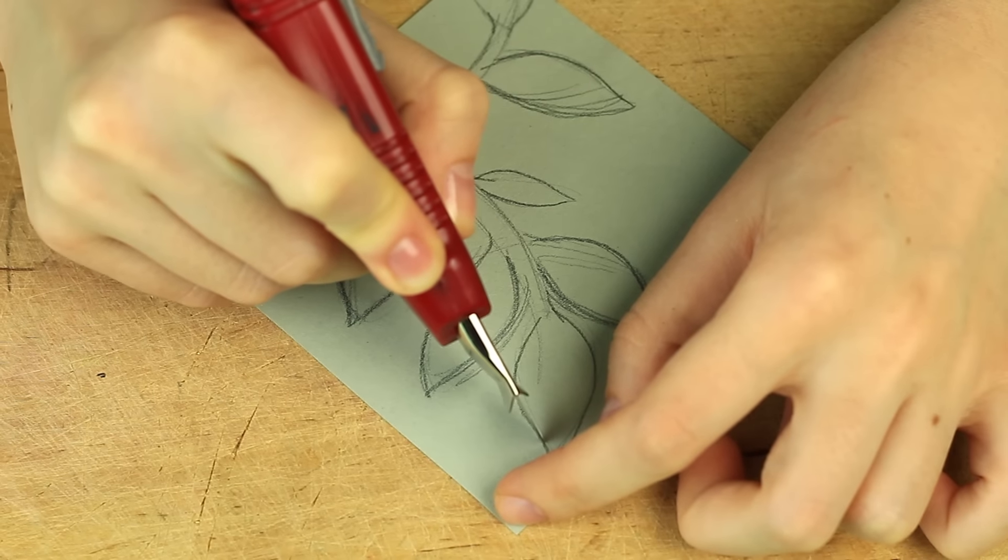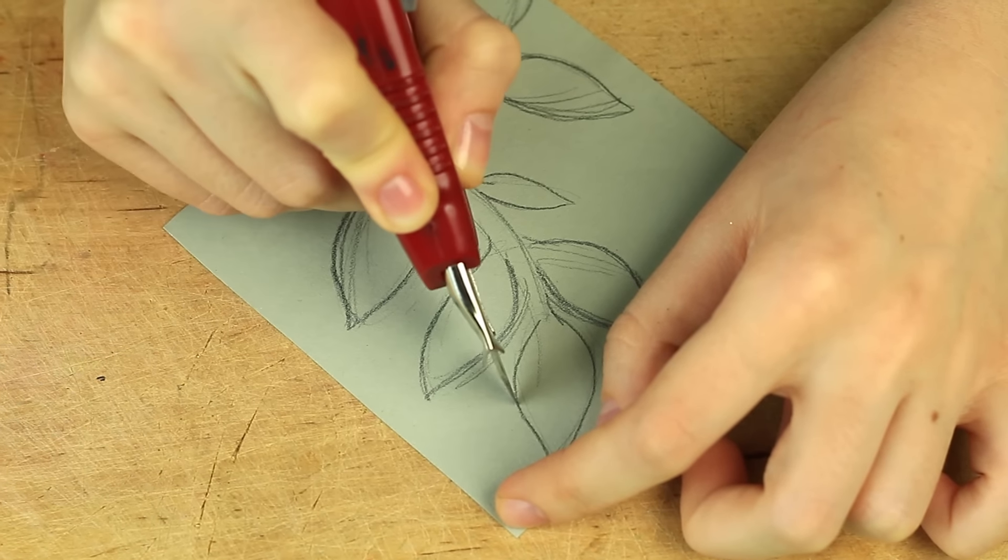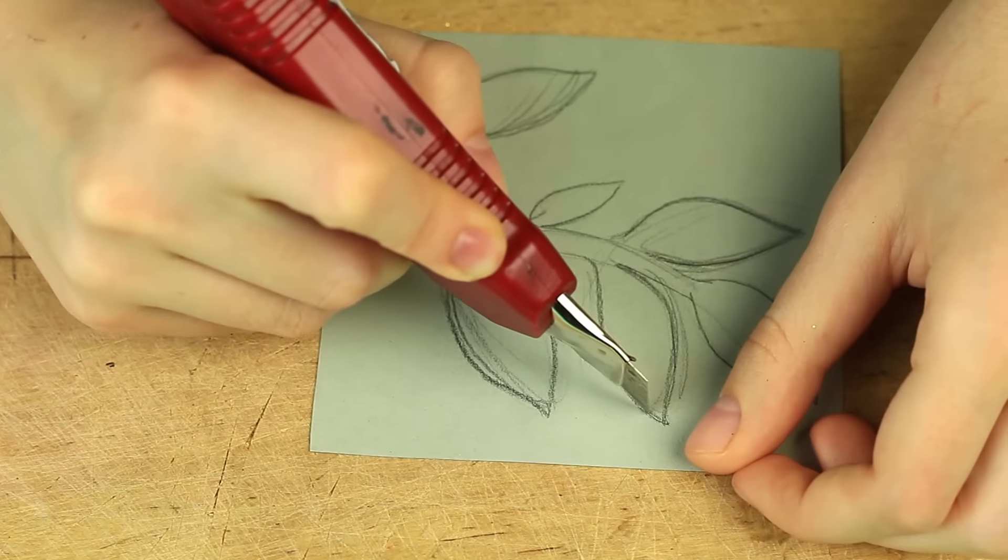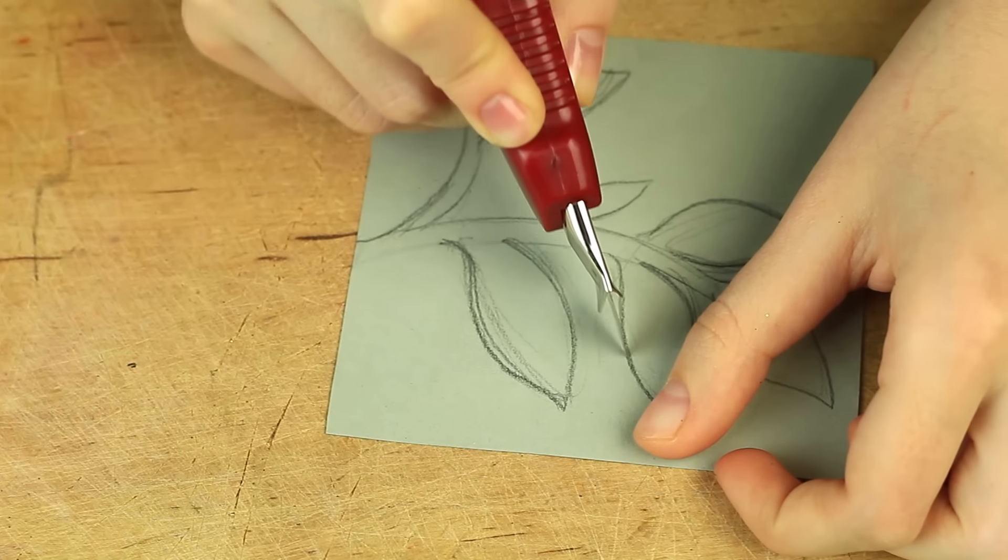We'll use a craft knife, so don't forget to underlay a cutting board. Cut out the outline. Be careful to keep the stem safe. We'll use it later on.